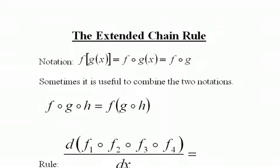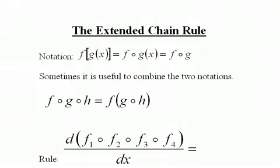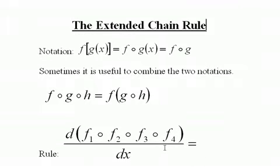And this notation combining the two is very useful for explaining the extended chain rule. Now we're not going to extend this on into infinity. We're just going to do four. And once you see how it's done with four, then it's done the same way with five, six, or any number.